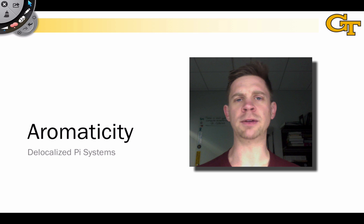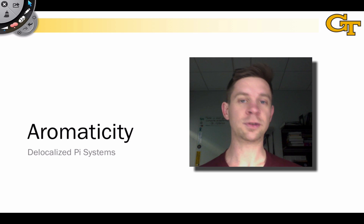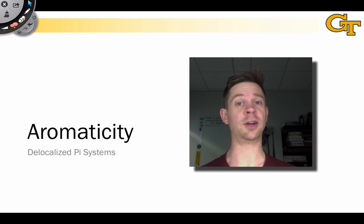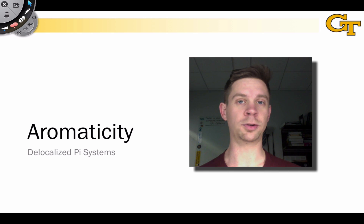We'll see what these terms mean throughout this lesson. Finally, we'll take a look at different types of aromatic hydrocarbons, polycyclic aromatic hydrocarbons containing fused benzene rings, and annulenes, which are larger structures consisting of alternating single and double carbon-carbon bonds.